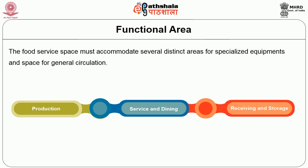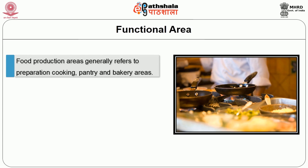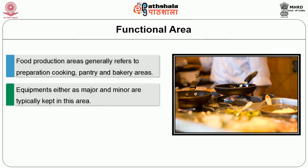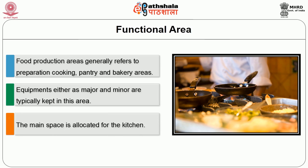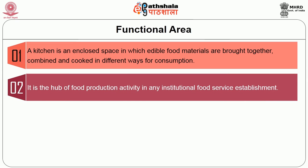Let us see the areas one by one. The first is food production area. Food production areas generally refers to preparation, cooking, pantry and bakery areas. Equipment, either major or minor, is typically kept in this area and the main space is allocated for the kitchen. A kitchen is an enclosed space in which edible food materials are brought together, combined and cooked in different ways for consumption. It is the hub of food production activity in any institutional food service establishment.